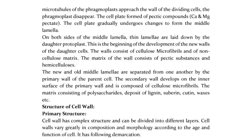The secondary wall develops on the inner surface of the primary wall and is composed of cellulose microfibrils. The matrix consists of polysaccharides with deposits of lignin, suberin, cutin, and waxes. The cell wall has a complex primary structure and can be divided into different layers. Cell walls vary greatly in composition and morphology according to the age and function of the cell.